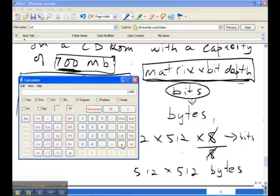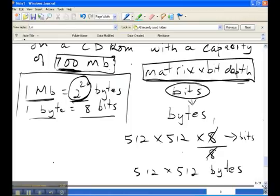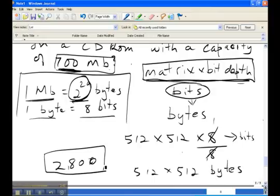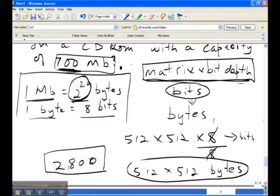So we get 2800 as our answer. So 2800 images, each with a memory of 512 by 512 bytes, can be stored on a 700 megabyte CD-ROM.